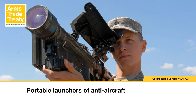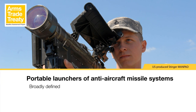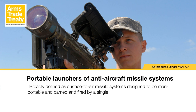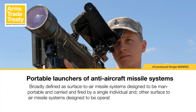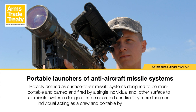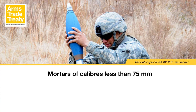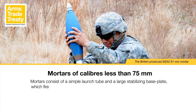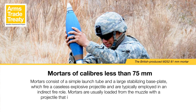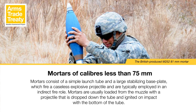Portable launchers of anti-aircraft missile systems are included in Module 4, which discusses man-portable air defence systems (MANPADS) in the context of the Missiles and Missile Launcher category. Regarding mortars, the UN Register description for large calibre artillery covers mortars of at least 75mm calibre, while the established definition for light weapons includes mortars up to 100mm calibre. Mortars are a form of light artillery consisting of a simple launch tube and a large stabilising base plate, which fire a caseless explosive projectile and are typically employed in an indirect fire role.